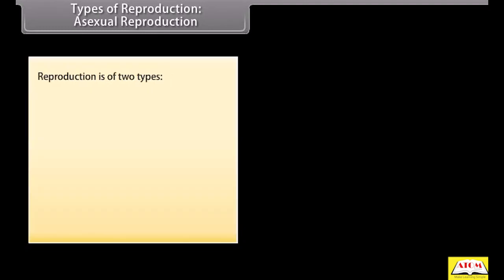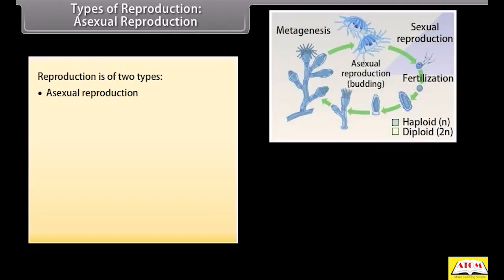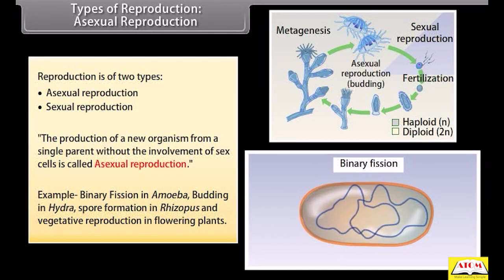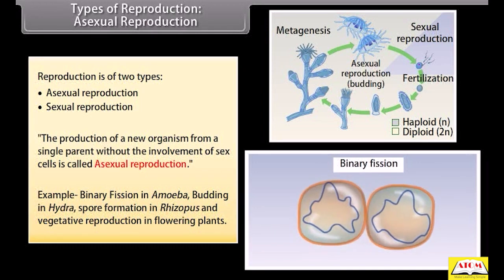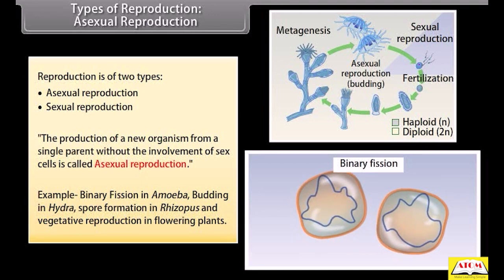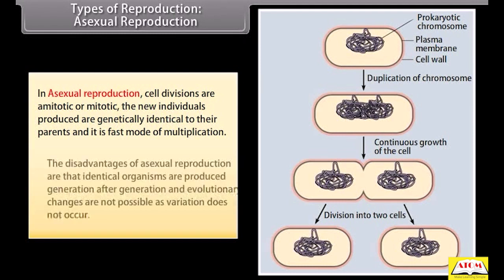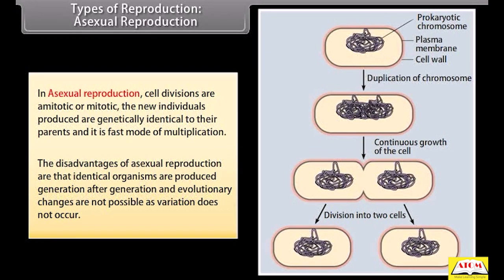Reproduction is of two types: asexual reproduction and sexual reproduction. The production of a new organism from a single parent without the involvement of sex cells is called asexual reproduction. Examples include binary fission in amoeba, budding in hydra, spore formation in Rhizopus, and vegetative reproduction in flowering plants. In asexual reproduction, cell divisions are amitotic or mitotic, and new individuals produced are genetically identical to their parents. It is a fast mode of multiplication. Disadvantages include that identical organisms are produced generation after generation and evolutionary changes are not possible, as variation does not occur.